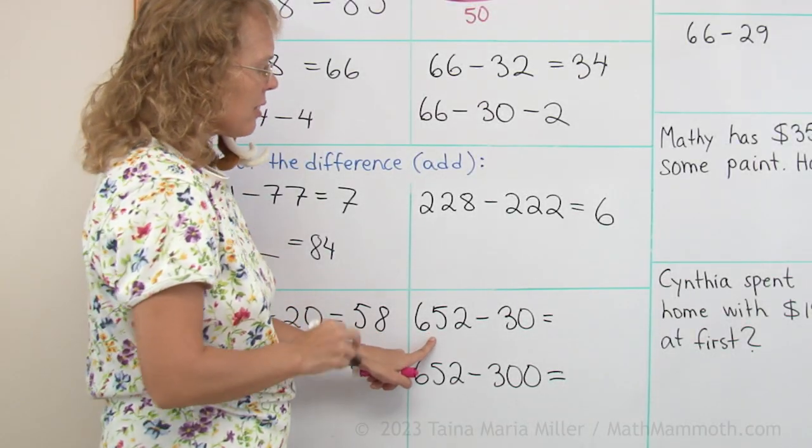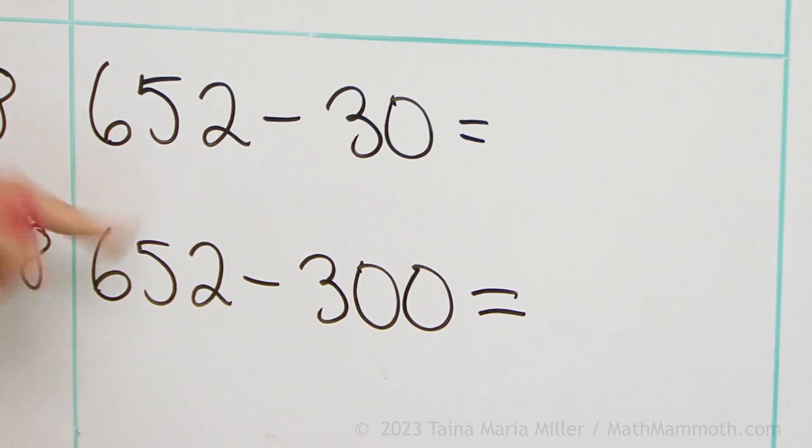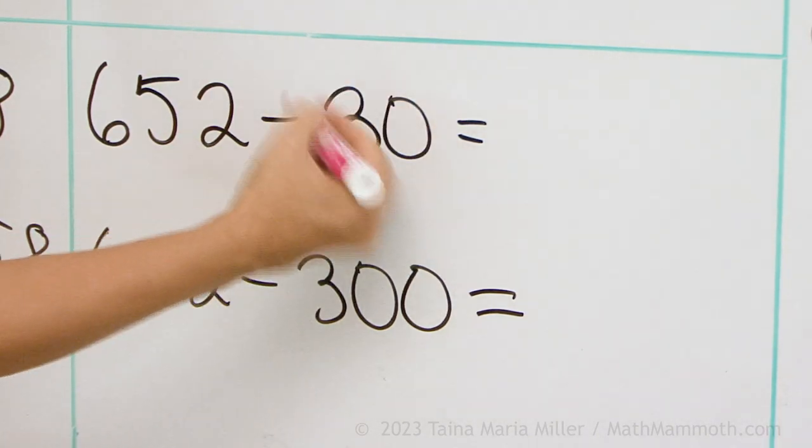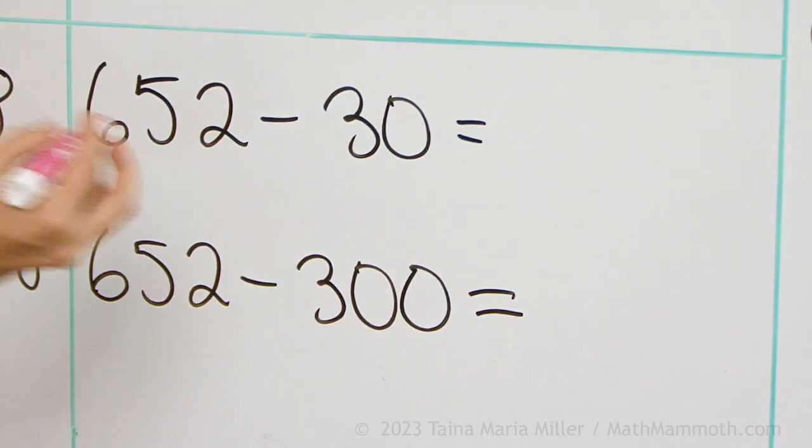652 minus 30. 30 is 3 tens. So over here you concentrate on the tens digit, 5 tens.